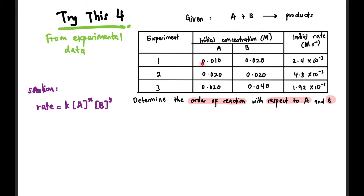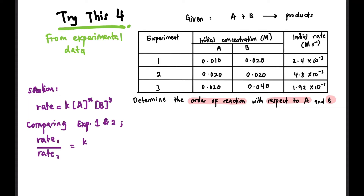What we need to do is look at the data given. I take 2 experiments — let's say experiments 1 and 2. If we observe carefully, the concentration of species B in experiments 1 and 2 is maintained at 0.2, while the concentration of A changes, and the initial rate also changes. So we write the equation comparing experiments 1 and 2: rate 1 over rate 2 equals K times concentration of A to the power of X times concentration of B to the power of Y, divided by K times concentration of A to the power of X times concentration of B to the power of Y.